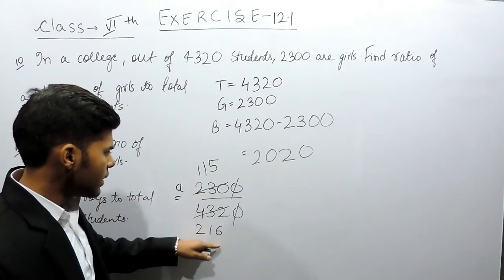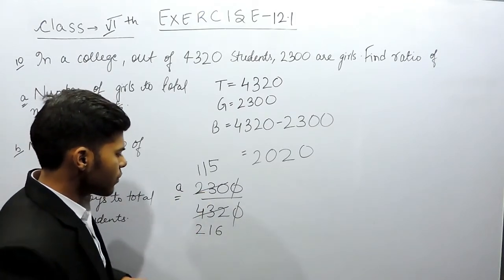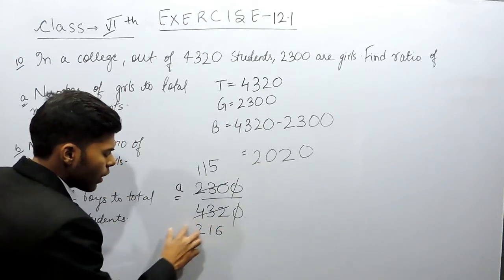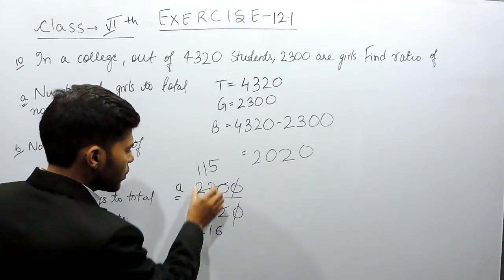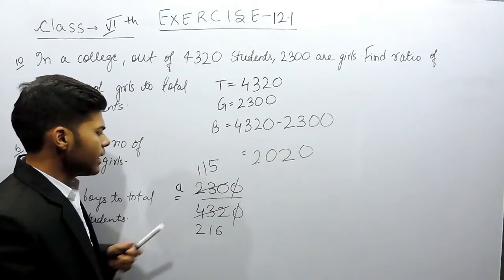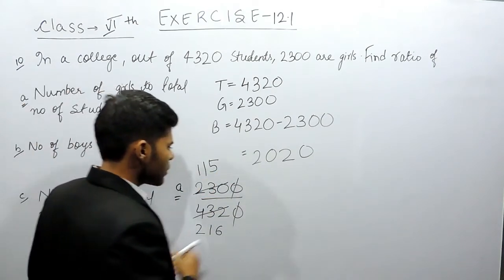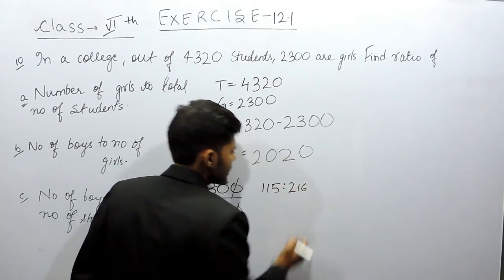Now, we will check whether this can be cancelled out or not. First of all, 216 can go in the table of 3 or in the table of 2, but this cannot go in the table of 3, neither in table of 2. So, our answer will be 115 ratio 216.